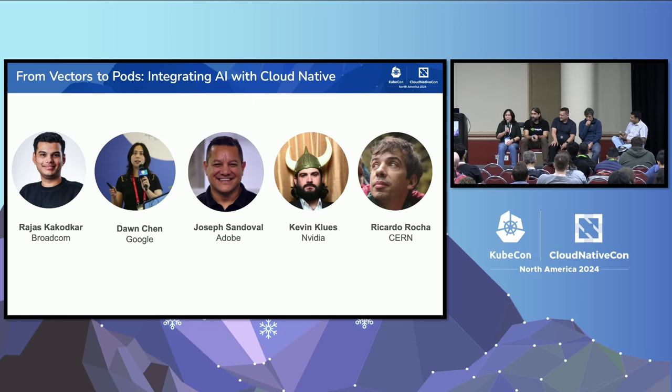My name is Dong Chen from Google. I'm one of the original founding engineers for Kubernetes, 10 years ago. I'm also a tech lead for SIG Node since its inception, and a tech lead for GKE for the last 10 years.